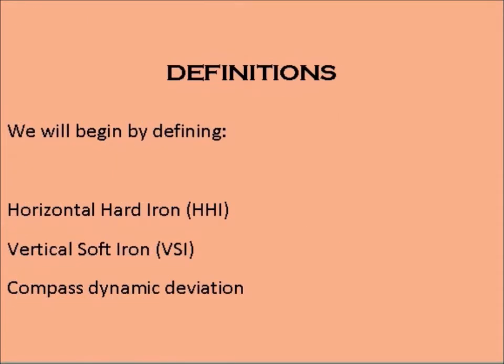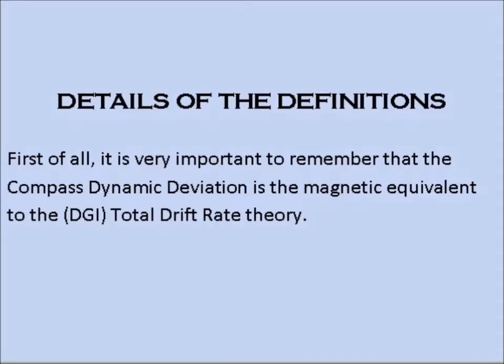Definitions. We will begin by defining Horizontal Hard Iron HHI, Vertical Soft Iron VSI, and Compass Dynamic Deviation. First of all, it is very important to remember that compass dynamic deviation is the magnetic equivalent to the DGI total drift rate theory.